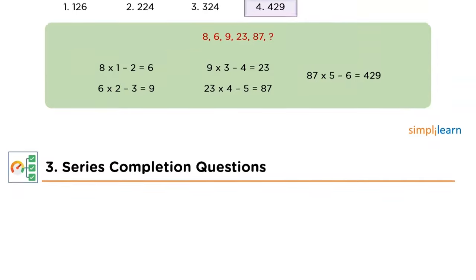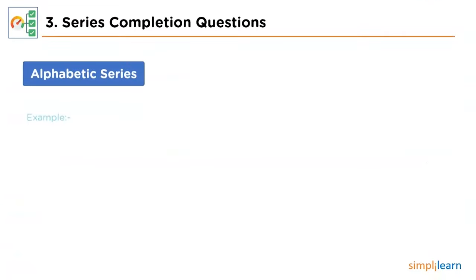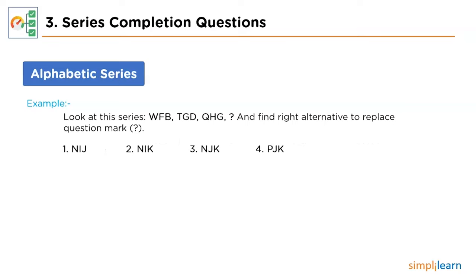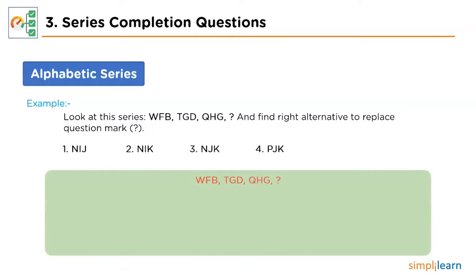Let's look into one more problem for Series Completion. This time the sequence is alphabetical, going like WFB, TGD, QHG. We are supposed to find the alternative that replaces the missing term. The logic for alphabetical sequences is most frequently embedded in their numerical ordering, so let's bring in an alphanumeric table.